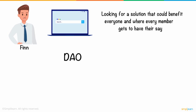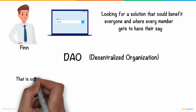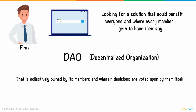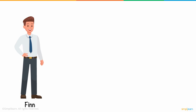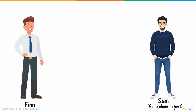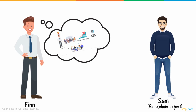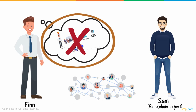That is when he came across the concept of DAO, which is a decentralized organization that is collectively owned by its members, wherein decisions are voted upon by themselves, and which runs on blockchain technology. To understand its concept in depth, he went to his friend Sam, who is a blockchain expert. Finn explained his situation, how he came across the DAO, and why he wants to know more about it. On realizing his excitement and curiosity, Sam decided to take him through the DAO and how it functions.